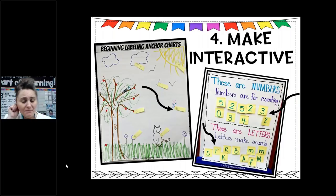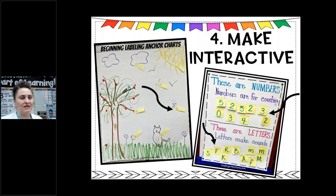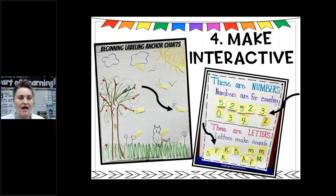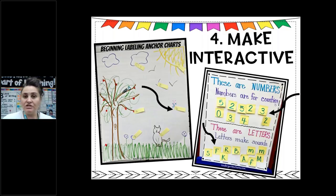Making anchor charts interactive is kind of like my goal in the classroom — to make learning as fun and interactive as possible. I want it to be purposeful and meaningful, but I don't want to always be the one up front. I want my kids to take part in the learning because they're the ones who are learning. So every time I make an anchor chart, I try to think: can I make this interactive? And how?